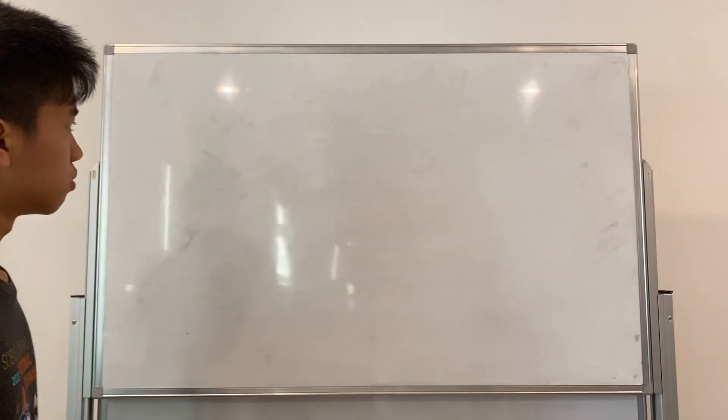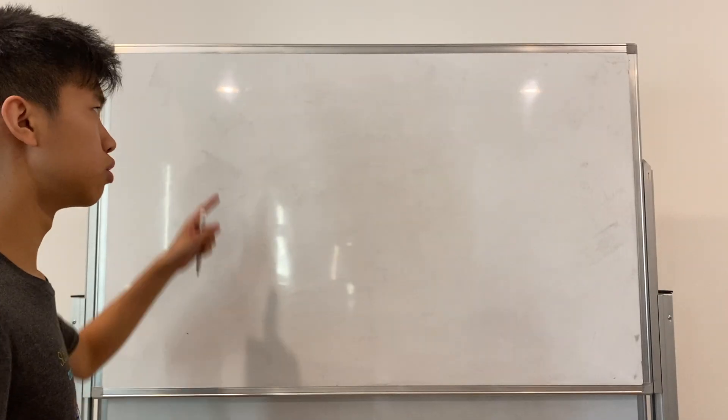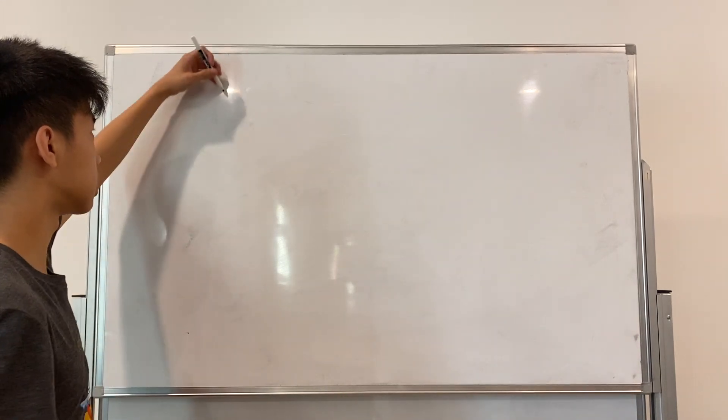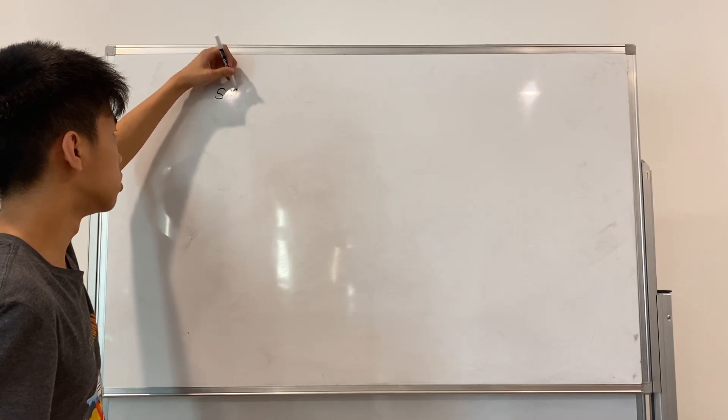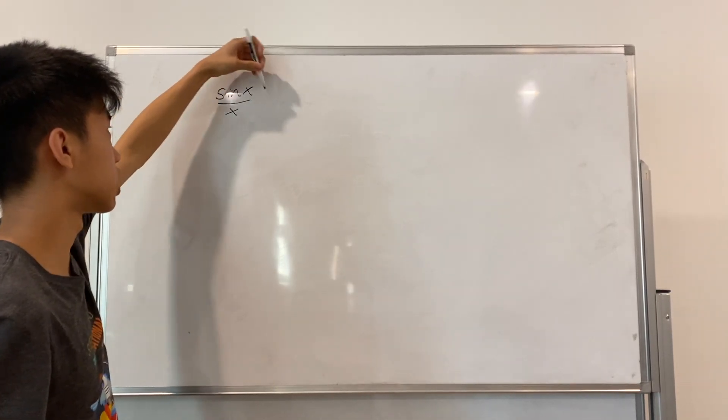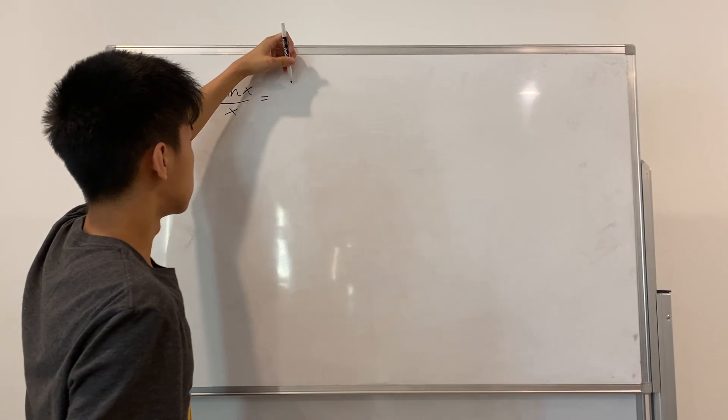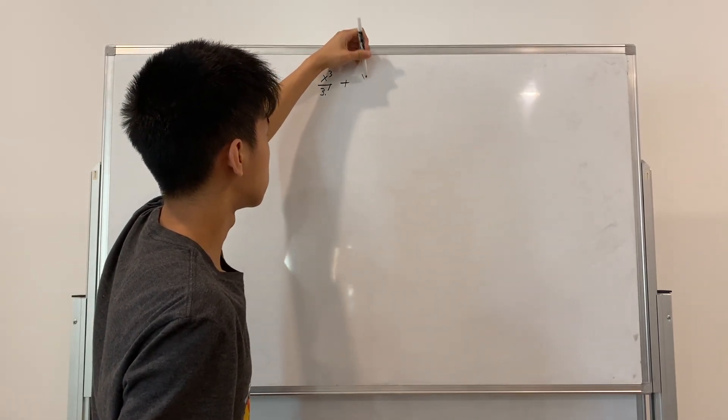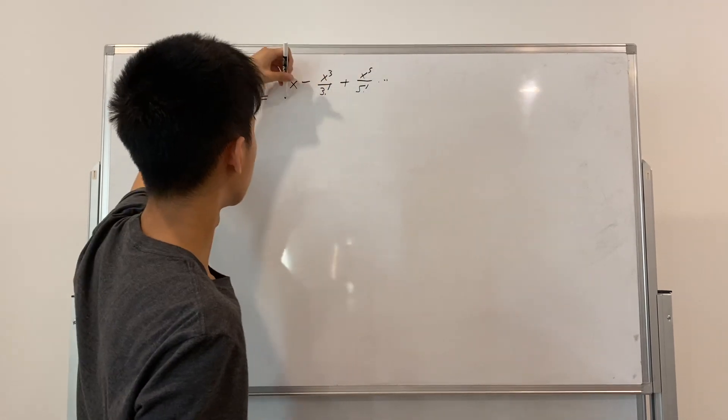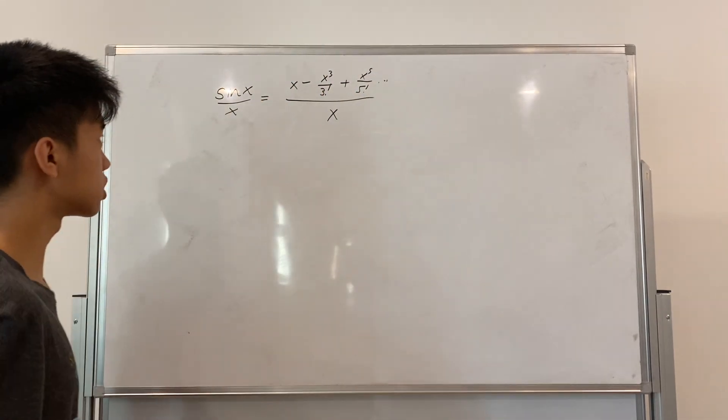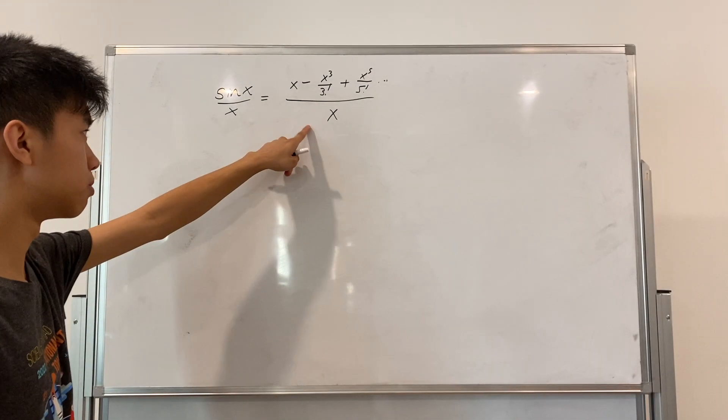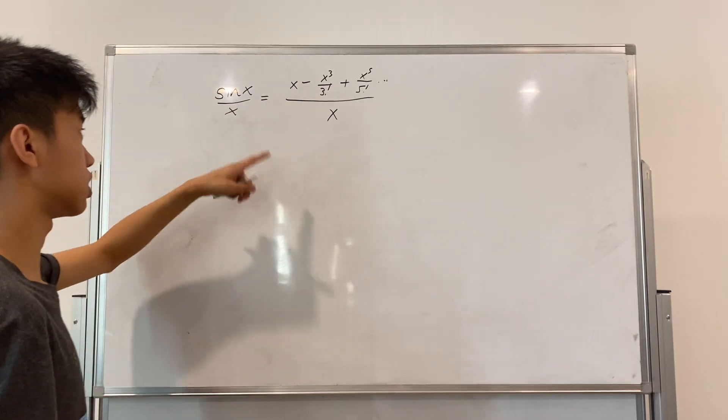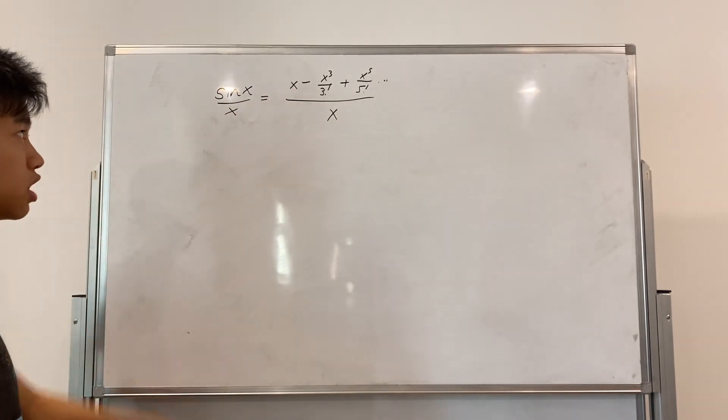Okay, so in one of my last videos where I tried to prove that the derivative of sine of x was cosine of x using the definition of derivatives, I used the Taylor series expansion for sine of x, which was x minus x cubed over 3 factorial plus x to the fifth over 5 factorial, dot dot dot, over x. However, there's a fatal flaw in that method, and that is the Taylor series of sine of x is based on the derivatives of sine of x.